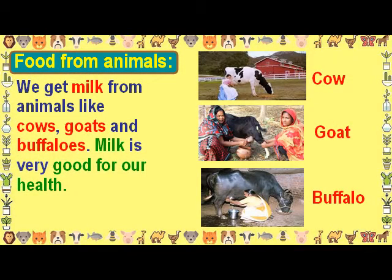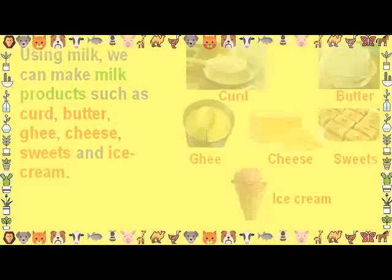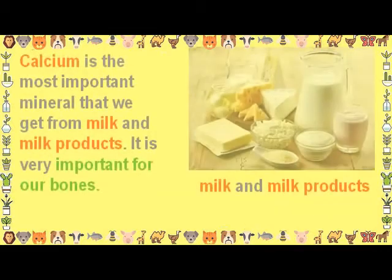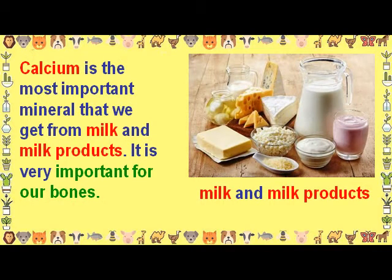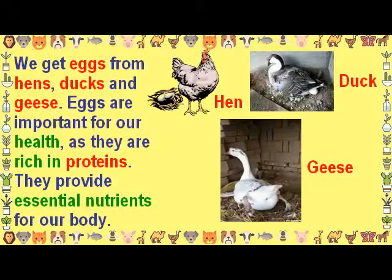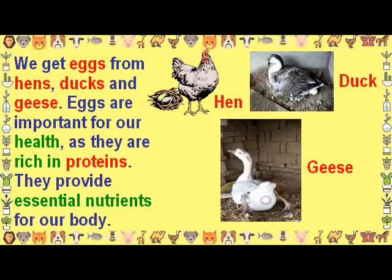Food from animals: We get milk from animals like cows, goats, and buffaloes. Milk is very good for our health. Using milk we can make milk products such as curd, butter, ghee, cheese, sweets, and ice cream. Calcium is the most important mineral that we get from milk and milk products; it is very important for our bones.